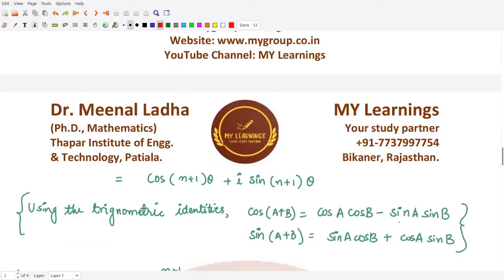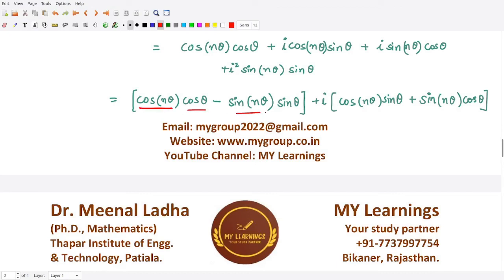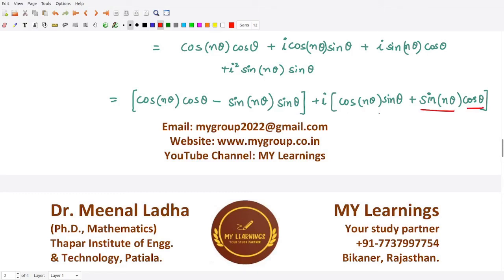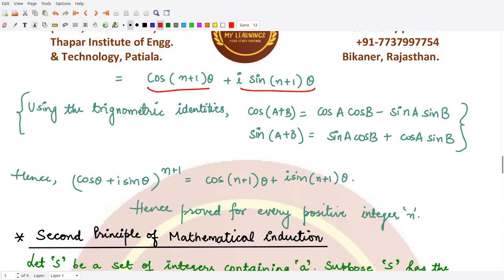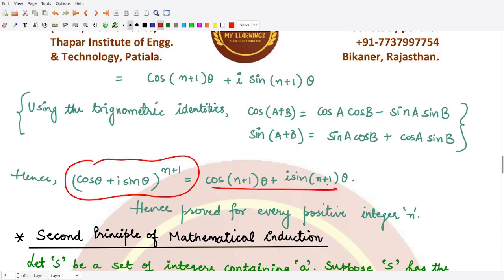Applying trigonometric identities: the real part cos(nθ)cos θ − sin(nθ)sin θ matches the identity cos(A+B) = cos A cos B − sin A sin B, giving cos(nθ + θ) = cos((n+1)θ). The imaginary part sin(nθ)cos θ + cos(nθ)sin θ matches sin(A+B) = sin A cos B + cos A sin B, giving sin(nθ + θ) = sin((n+1)θ). Therefore, (cos θ + i sin θ)^(n+1) = cos((n+1)θ) + i sin((n+1)θ), which proves De Moivre's theorem.